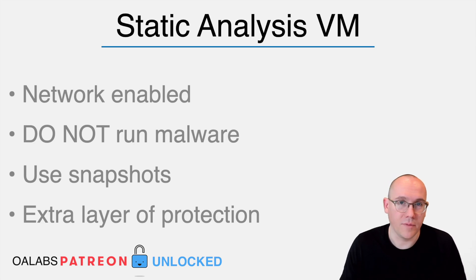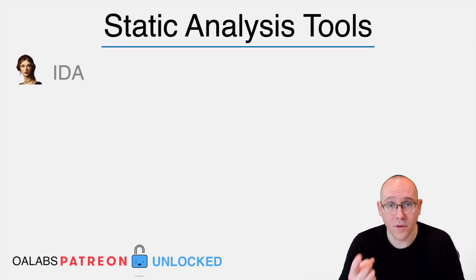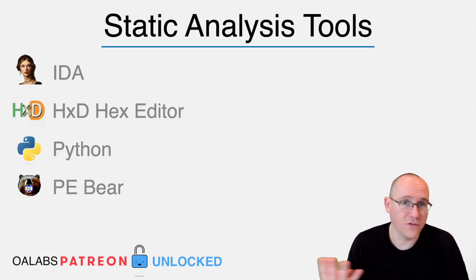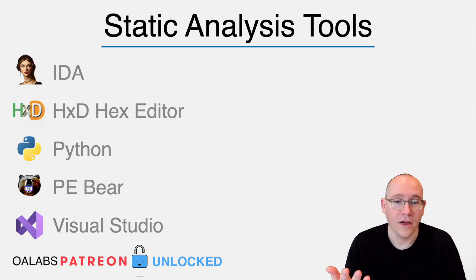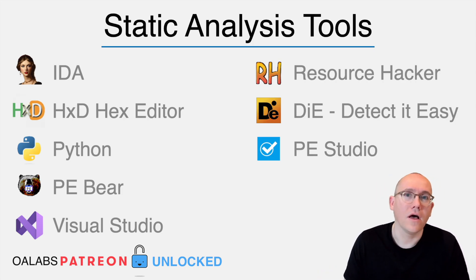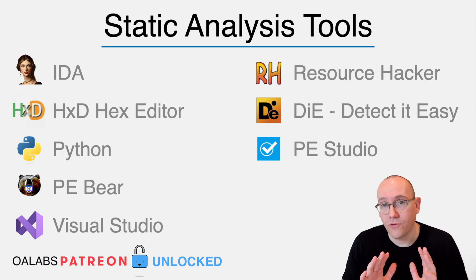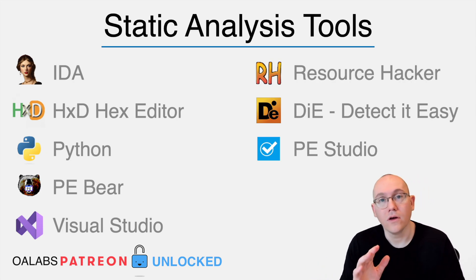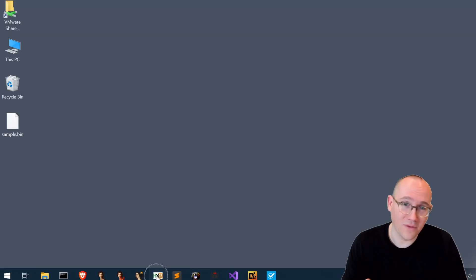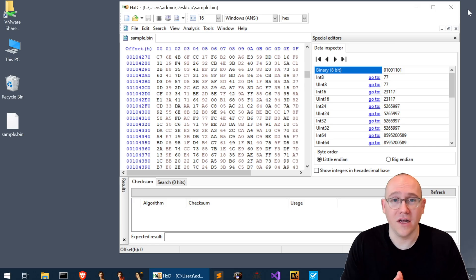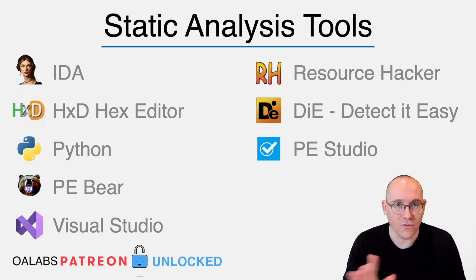In my static VM I have a few tools — these are all I really use. I have IDA, a hex editor, a Python interpreter, PE-bear for looking at PE files, Visual Studio for compiling code, Resource Hacker for looking at resources, and DIE and PEStudio which I never really use but keep just in case. For Visual Studio, just get the community version of 2022 — it'll work fine. For the hex editor, I use HxD, which is a super old tool. I just use it to view hex — not for struct building or anything like that.